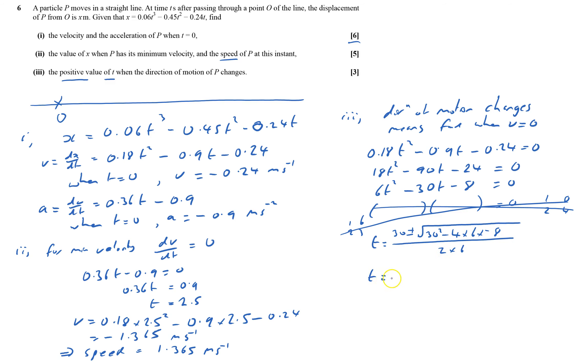Put it into a calculator. That gives me t equals 5.253785, or negative 0.2537.